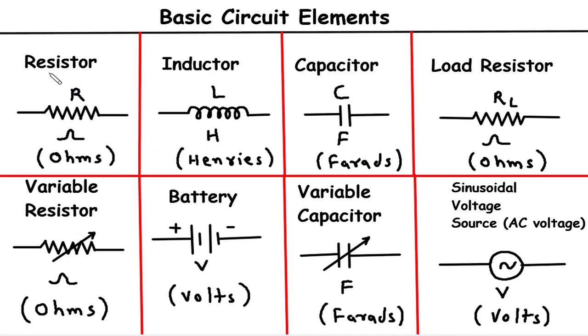1. Resistor. Let's start with the resistor. A resistor is a passive two-terminal component that restricts the flow of electric current. It is represented by a zigzag line symbol in circuit diagrams. Resistor values are measured in ohms, and they are commonly used to control current, voltage, and power levels within a circuit.